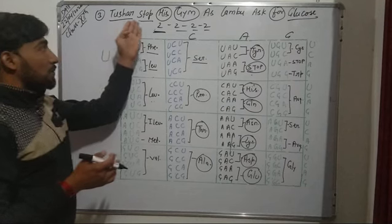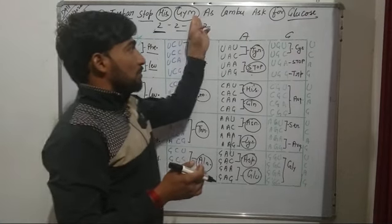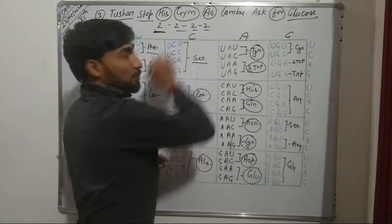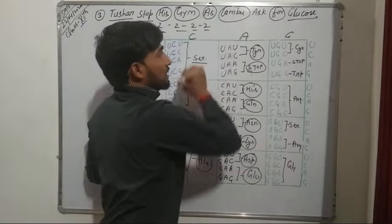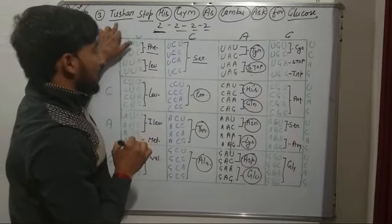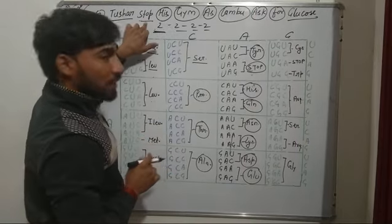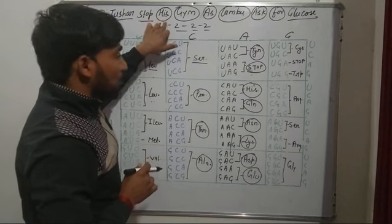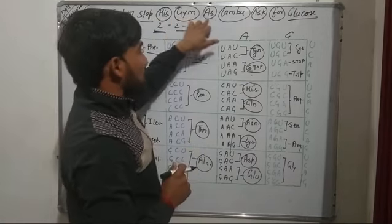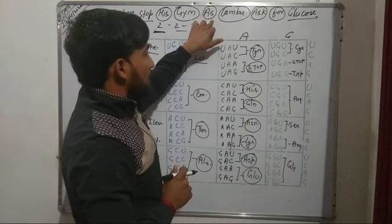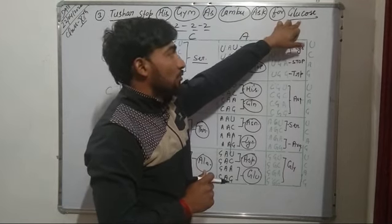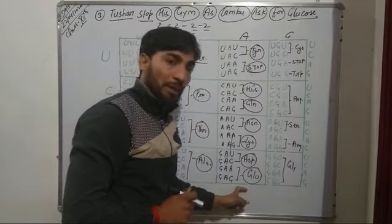So: Tussar for tyrosine, stop for stop codons, HIS for histidine, GEM for glutamine, AS for asparagine, Lumbu for lysine, ASK for aspartate, and glucose for glutamate.